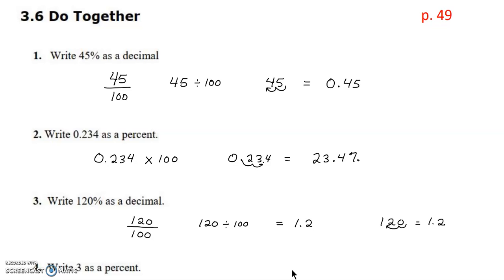For number four, we're writing 3 as a percent. Three is a whole number, and the decimal point is always present even if not written. We multiply by 100, so 3 equals 300%. Moving the decimal two places to the right and adding zeros confirms that 3 is 300%.